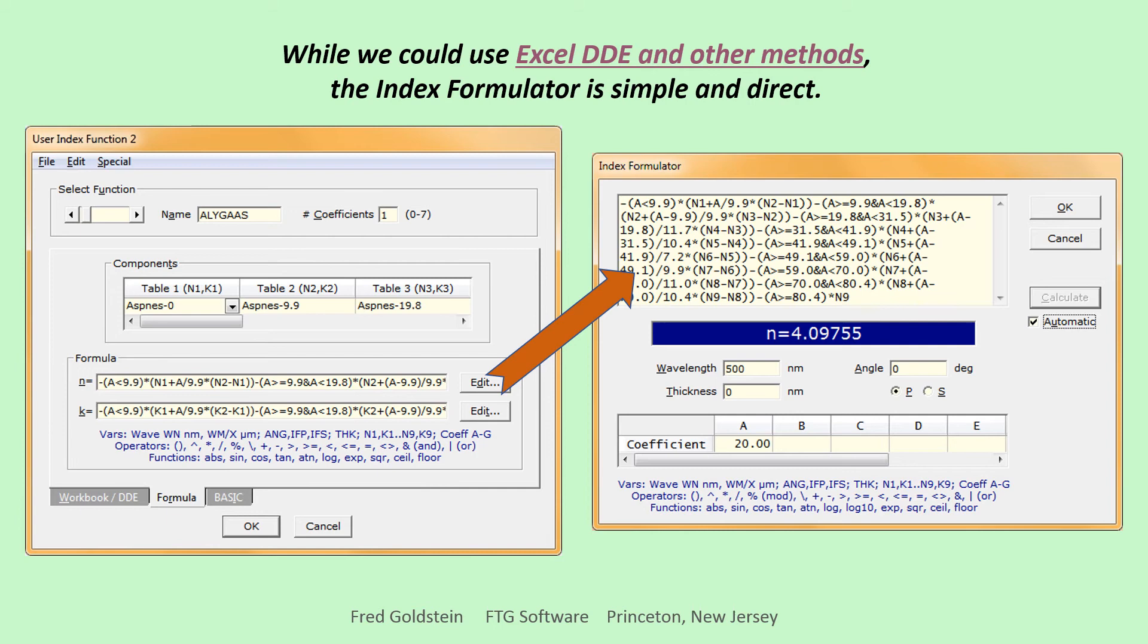While it is possible to directly utilize the Excel workbook in our optical thin film calculations, the index formulator is simpler and much faster. Since optical calculations already interpolate over wavelength, we only need to add a second interpolation over aluminum fraction X. The calculation, complex as it first appears, is really a single line of High School Algebra.